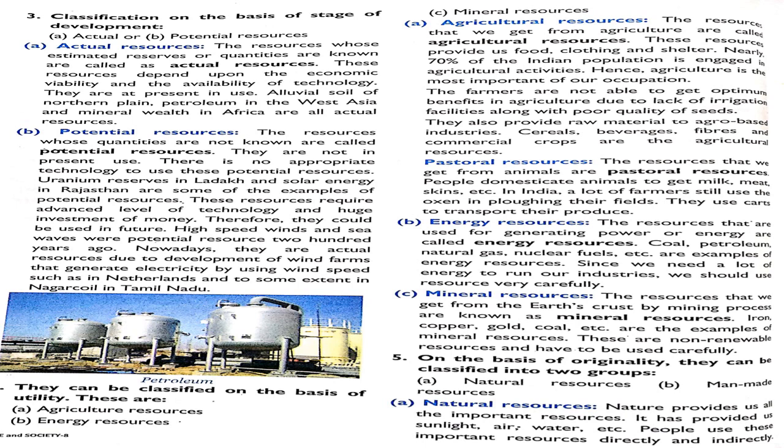Resources can also be classified on the basis of utility into agriculture resources, energy resources, and mineral resources. We also get petroleum this way. Agricultural resources are important because 70% of the Indian population is engaged in agricultural activities and agriculture is the most important occupation. However, farmers are not always able to get optimum benefit from these resources.